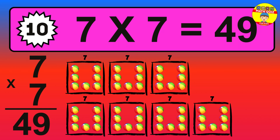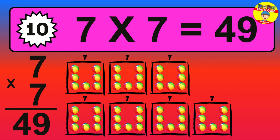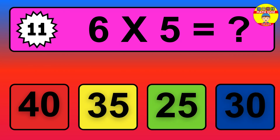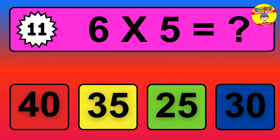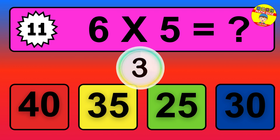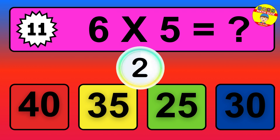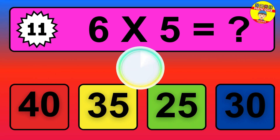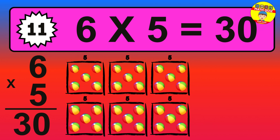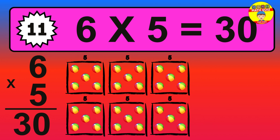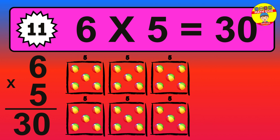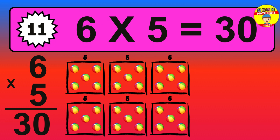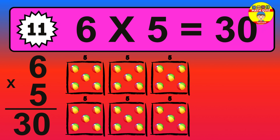Question eleven: six times five equals what? The answer is six times five is thirty. To calculate, we have six groups with five balls each one. So how many balls do we have? Thirty balls.